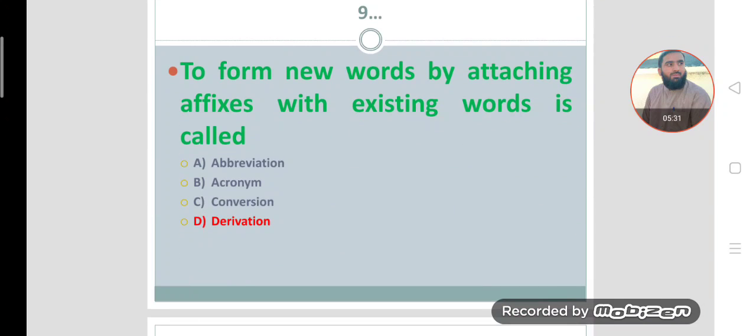Number nine: To form new words by attaching affixes with existing words is called derivation. Dear students, affixes include suffixes and prefixes. Prefixes—pre means before. When we attach something at the start of a word, we call them prefixes. For example, take the word complete. We add 'in' before complete: incomplete. So 'in' is a prefix.